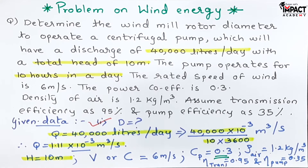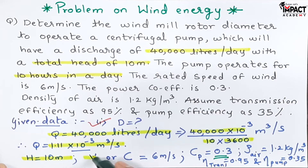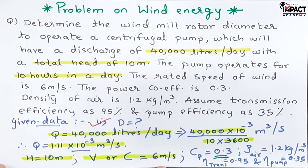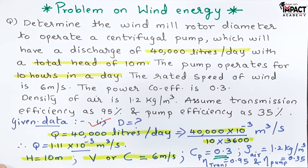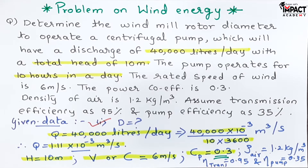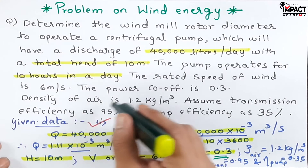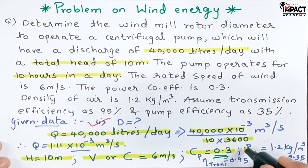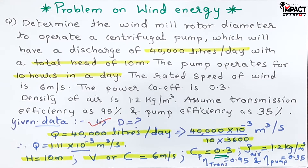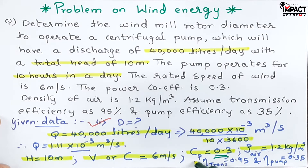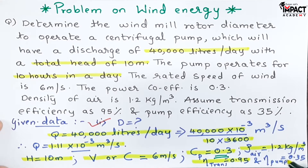The rated wind velocity is denoted by V or C, given as 6 m/s. The power coefficient is denoted by C_P = 0.3. The density of air is ρ = 1.2 kg/m³. Transmission efficiency is 95% (0.95) and pump efficiency is 35% (0.35).